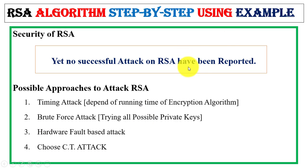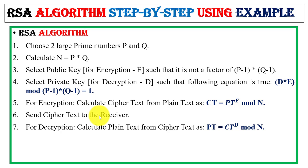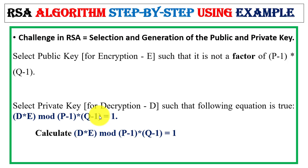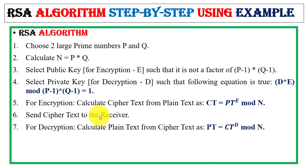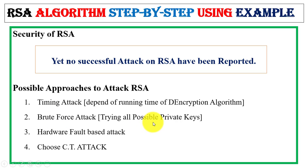Regarding the security of RSA, no successful attack on RSA has been reported. It is extremely difficult to compute all of this — selecting public and private keys is already a very difficult task, making it hard for attackers to crack this algorithm. Possible approaches to attack RSA include: timing attack, which depends on the running time of the decryption algorithm; brute force attack, where the attacker tries all possible private keys; hardware fault-based attack; and chosen ciphertext attack.